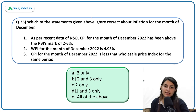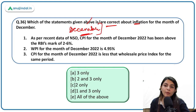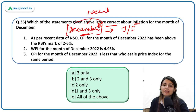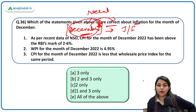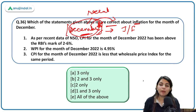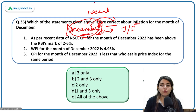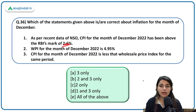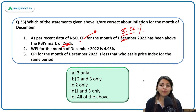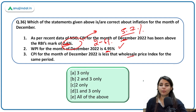For December 2022 inflation data: CPI for December 2022 has been above RBI's target of 2 to 6% — incorrect; CPI was 5.7%, marginally below the RBI mark, the first or second time it came within the target range. WPI for December was 4.95% — correct. CPI for December 2022 is less than WPI — incorrect; CPI was 5.7% and WPI was 4.95%, so CPI is higher than WPI.